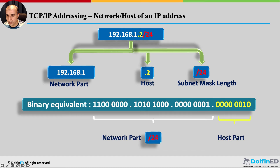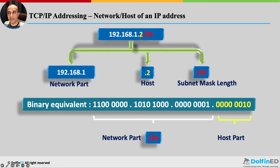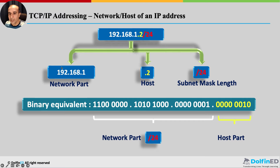Any IPv4 address is 32 bits long — four octets of eight bits each (8+8+8+8). With a slash 24, you count 24 bits from the left — that's three octets — as the network part, and the remaining eight bits are the host part. Take 192.168.1.2/24: the '192.168.1' is the network, and '.2' is the host — like an apartment number in a building or a house number on a street.